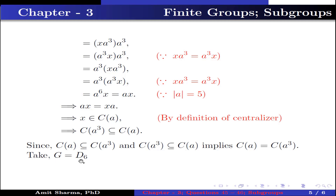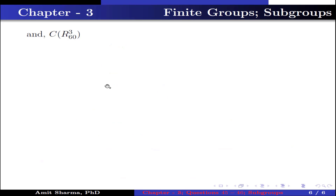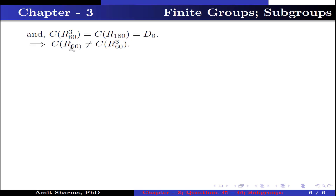Now take G equal to D6 and R60 belonging to D6; the order of R60 is 6. The centralizer of R60 contains the elements {R0, R60, R120, R180, R240, R300}. The centralizer of R60³ equals the centralizer of R180, which equals all of D6, because R180 commutes with every element of D6. This implies the centralizer of R60 is not equal to the centralizer of R60 cubed.